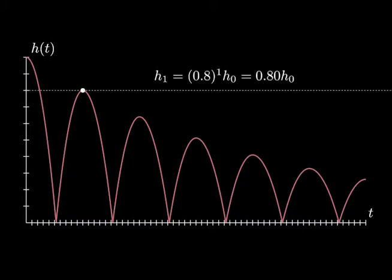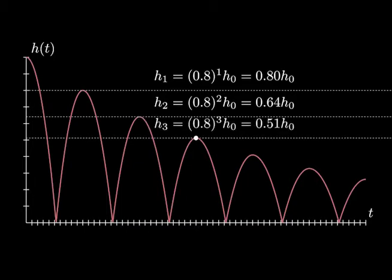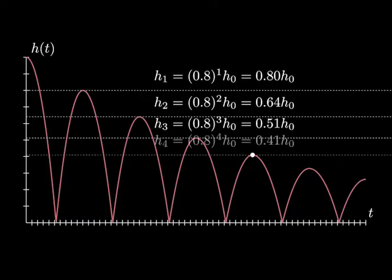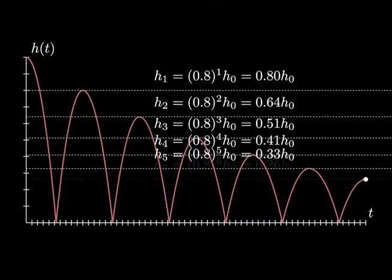So after one bounce, it will rise to 0.8 times the initial height. After two bounces, it should rise to 0.8 times 0.8 times the initial height. If we write the height after the nth bounce to be hn, then we might guess that the height hn is 0.8 to the n power times h0. Can we prove this?